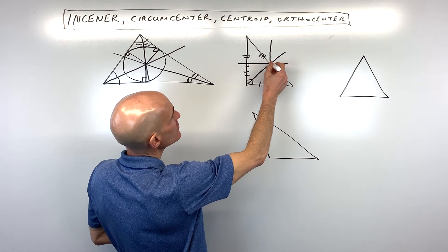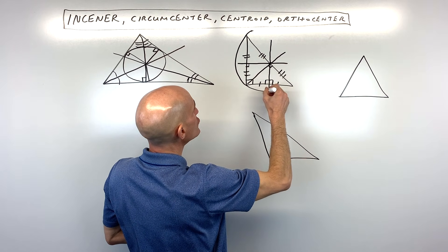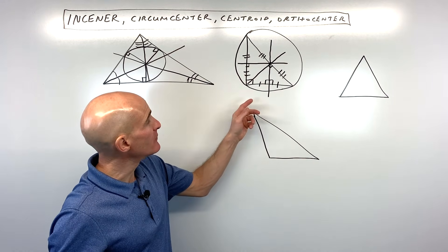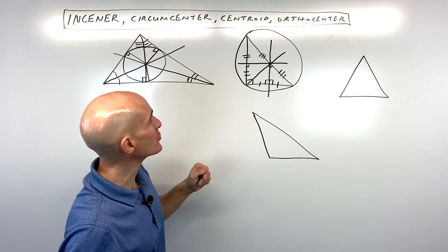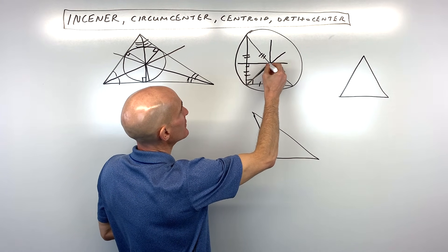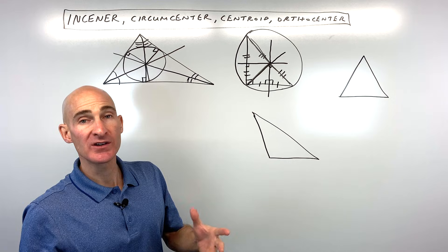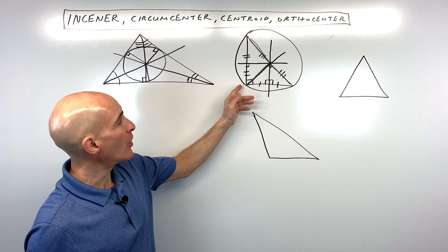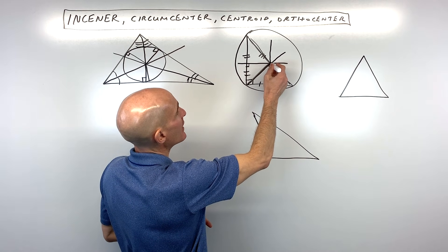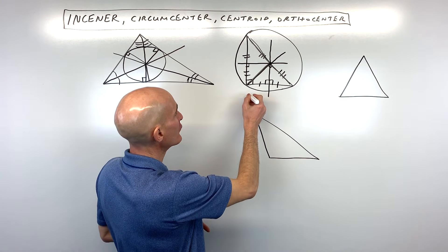The reason they call it the circumcenter is because you can circumscribe, or draw, a circle around the triangle such that the vertices of the triangle lie right on the circle. Now what they're going to ask you is something referring to the length of the radii. If you look at this radius here, and this radius here, and this radius here, all these radii are going to be congruent because the radii in a circle are congruent. Now this isn't a right triangle, and what you notice is that the point of concurrency — that circumcenter — is lying right on the triangle.